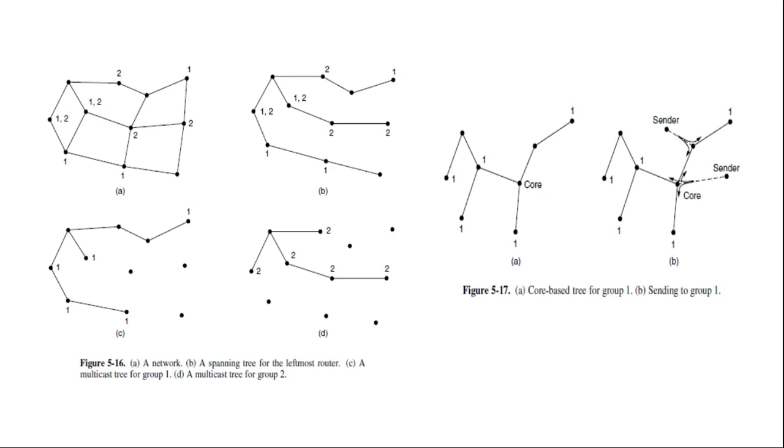This in turn means that routers must forward packets destined to group 1 in different directions depending on which node is sending to the group. When many large groups with many senders exist, considerable storage is needed to store all the trees.